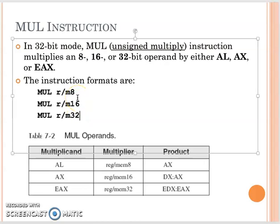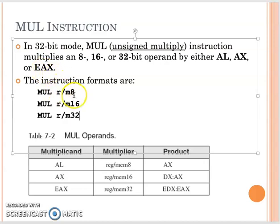You can have different operands to multiply, but they all multiply to a specific register. For example, if you do MUL with an 8-bit operand, then that value is used to multiply AL. If your operand is 16-bit, it multiplies AX. For 32-bit, by default it multiplies EAX. So for the MUL instruction, the multiplicand is always AL, AX, or EAX, and your multiplier will be the same-size register or memory operand.